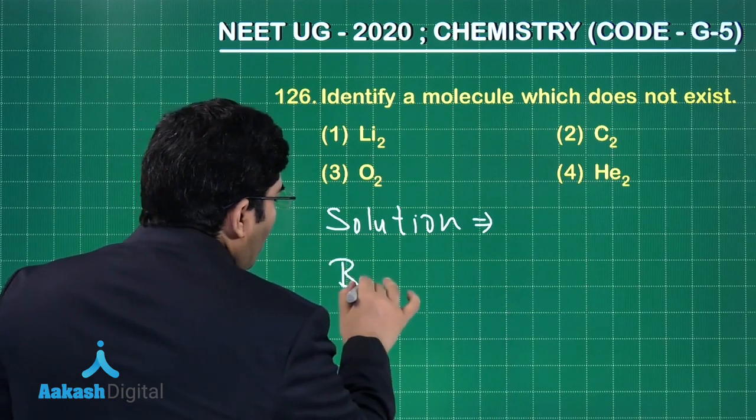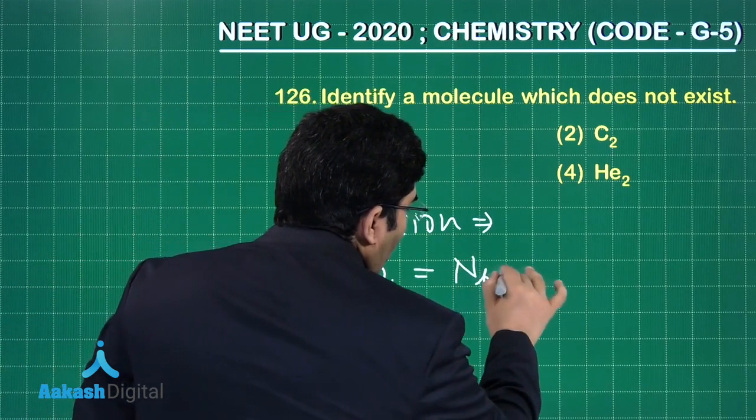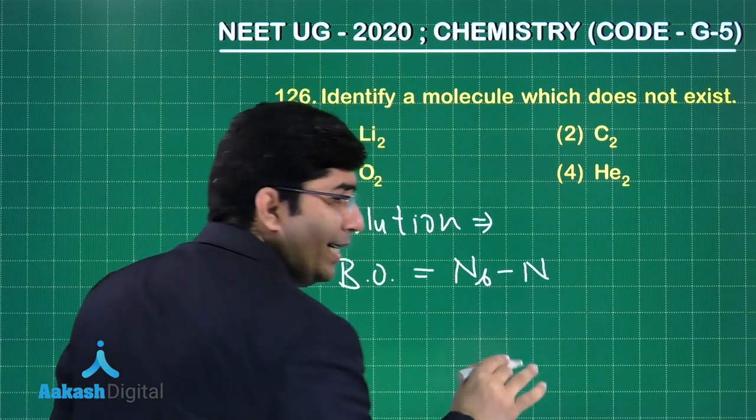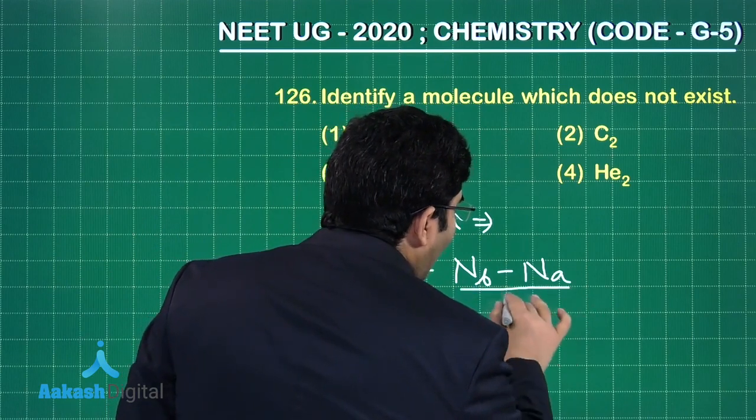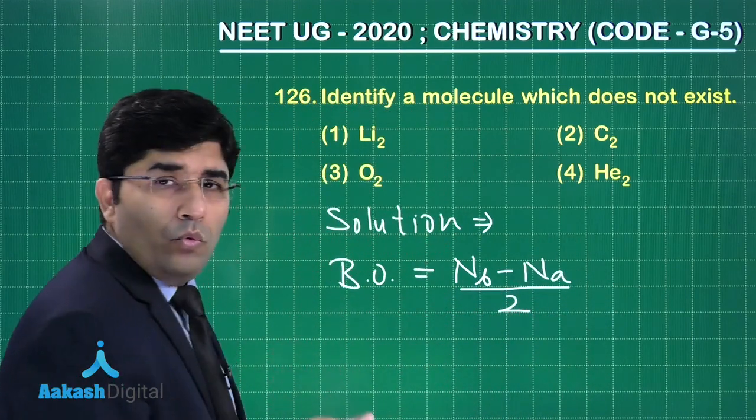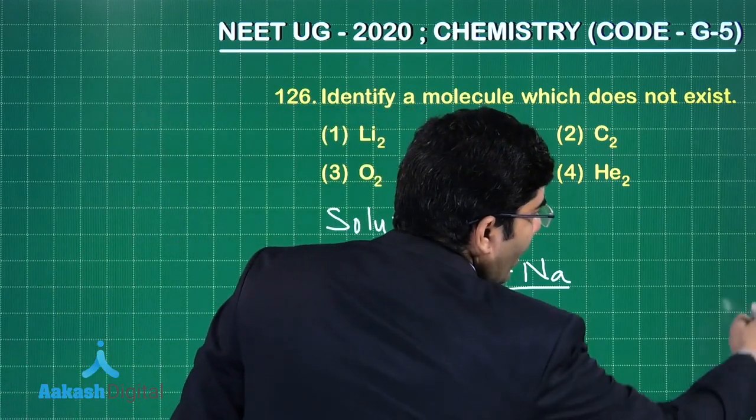We know that bond order is equal to the number of electrons which are present in the bonding orbitals minus number of electrons present in the anti-bonding orbitals divided by 2. In the case of helium...